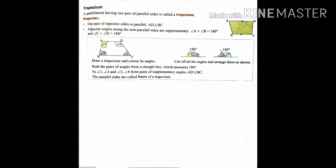First, we discuss the trapezium. A quadrilateral having one pair of parallel sides is called a trapezium. Properties of a trapezium: one pair of opposite sides is parallel (AD ∥ BC). Adjacent angles along the non-parallel sides are supplementary, meaning angle A + angle B = 180° and angle C + angle D = 180°. The parallel sides are called the base of the trapezium.